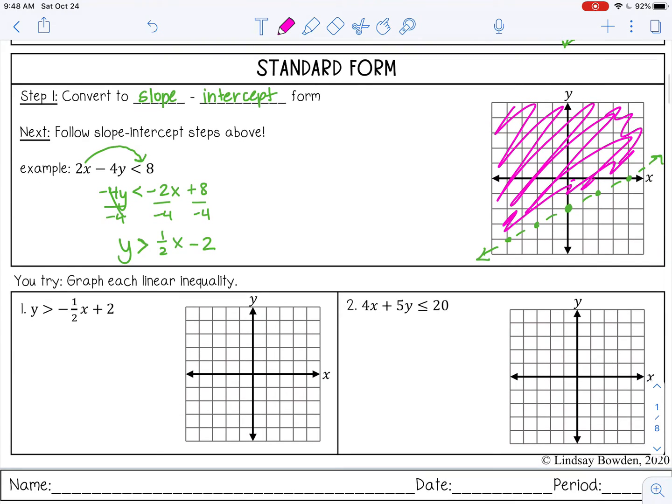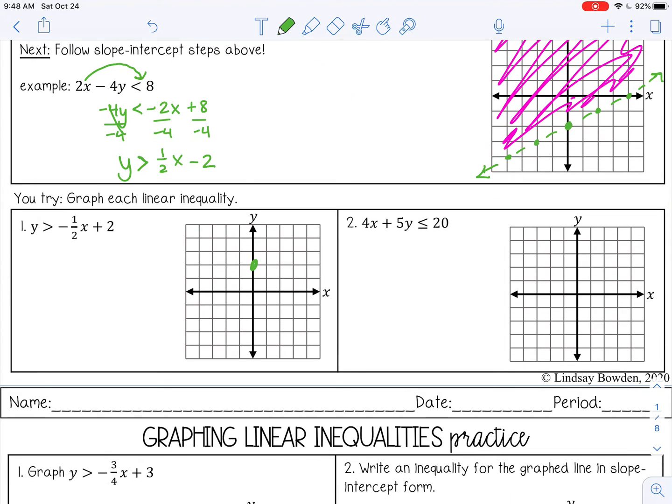Pause the video and try problems 1 and 2 by yourself. Let's see how we did. On number 1, plot the y-intercept of 2. Then rise 1, run 2. This is a negative slope, so make sure the line falls from left to right. This is going to be a dashed line because it's just greater than. Since it's greater than, we shade above the line.